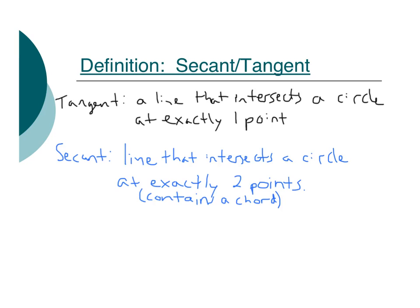The secant includes or contains a chord. So a secant is going to look something like, here's my circle, and there's my secant line. It goes through exactly two points here and here. Here's my chord. For a tangent, here's my circle, and there's my tangent line. It just touches the circle right there once.